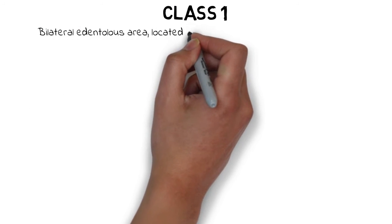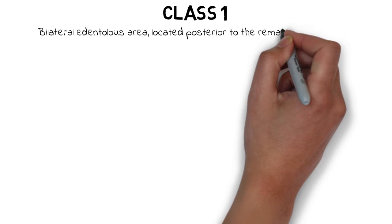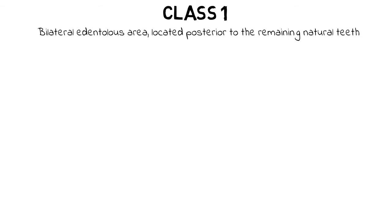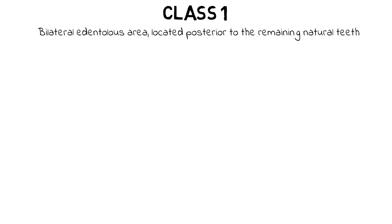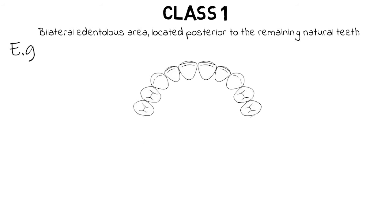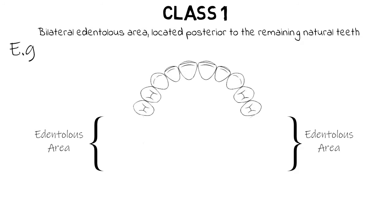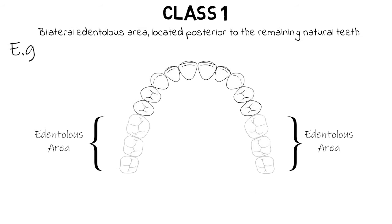Class 1 states that there is a bilaterally edentulous area located posterior to the remaining natural teeth. In this representation of a single jaw dentition, the teeth are absent on both sides — the right and the left — where the first, second, and third molars of both sides are absent, and this edentulous area is behind the remaining natural teeth. Therefore this edentulous state is classified as Class 1.